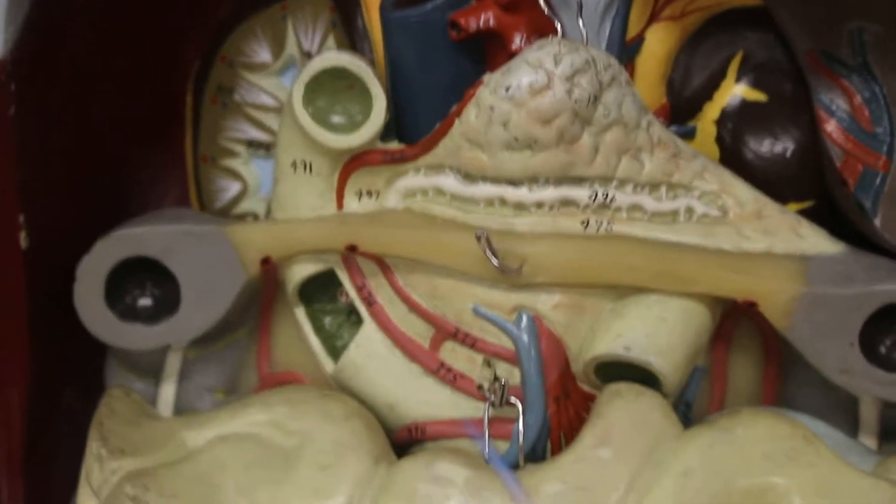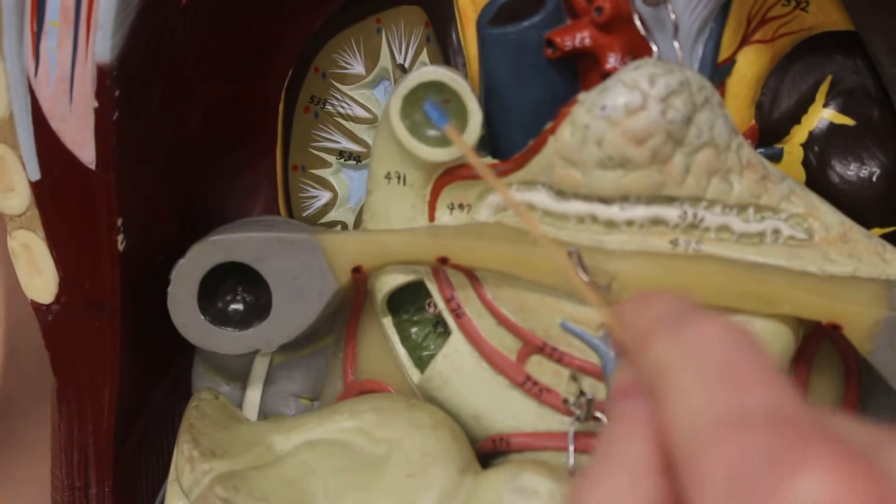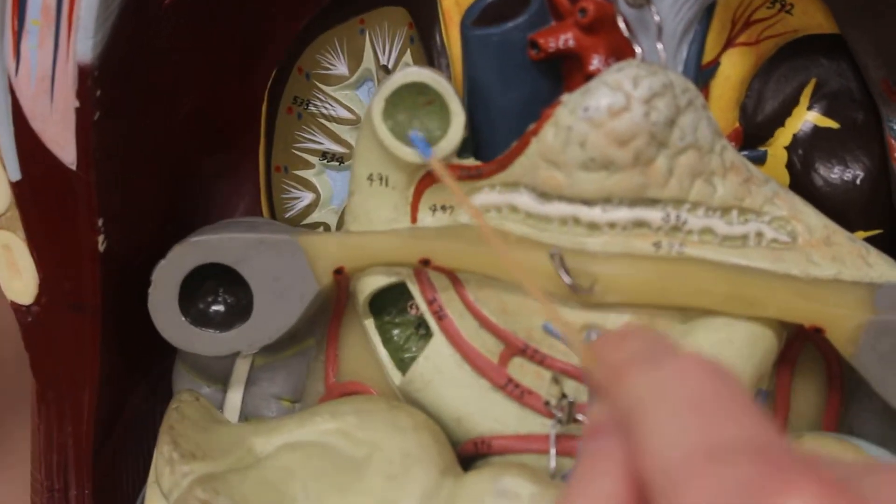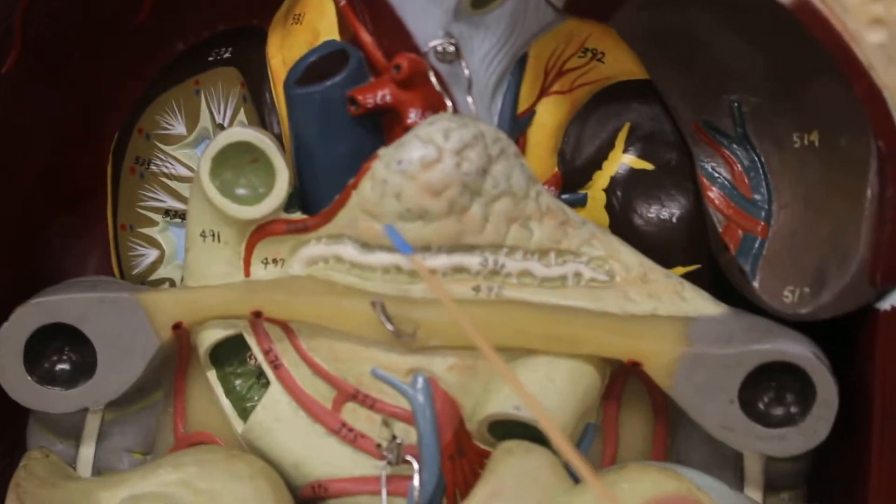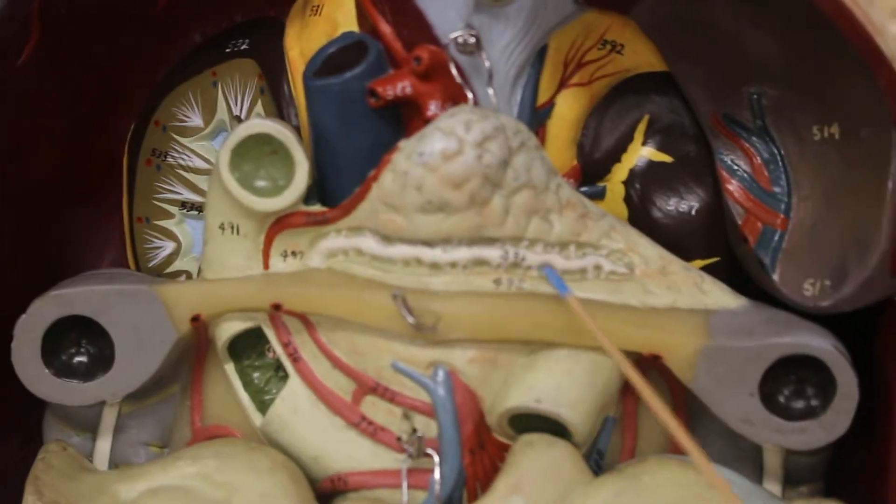The stomach then leads to the curvature here of the small intestine called the duodenum. We are now able to see the pancreas with the pancreatic duct.